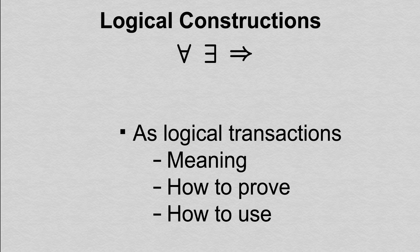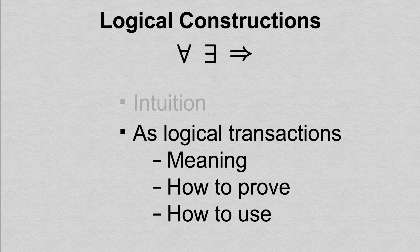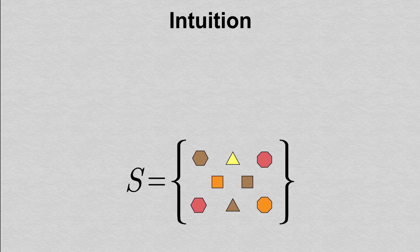Before going into the formal mechanics of these constructions, let's briefly discuss the intuitive meaning of each one. We'll illustrate their meanings by examples using the context of the set S below, whose elements are shapes of various colors.